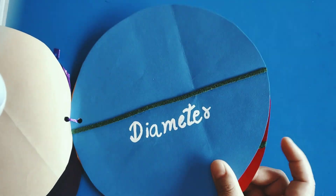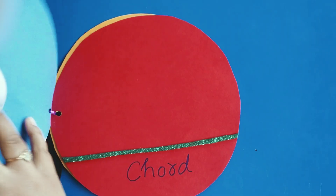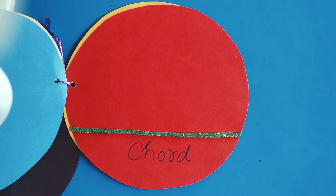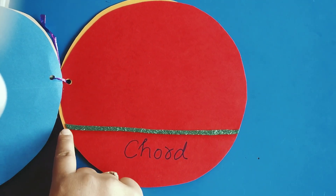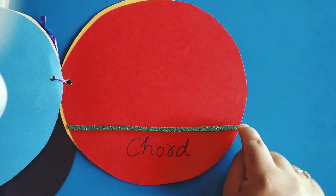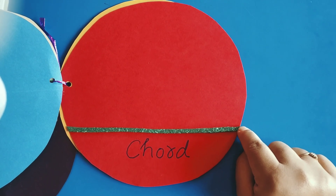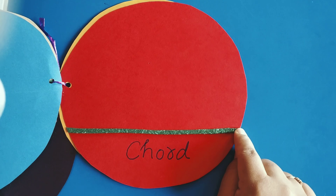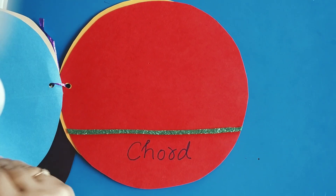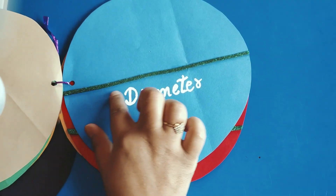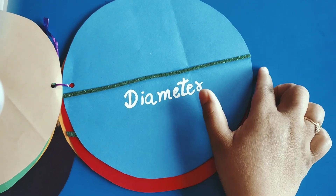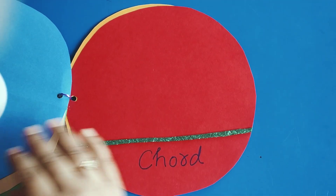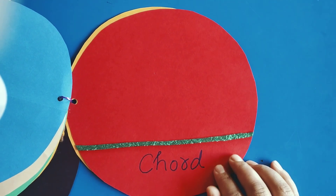The next is a chord. A chord is a line segment which will intersect the circle at two points. The longest chord of the circle is known as the diameter.